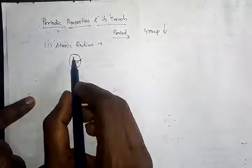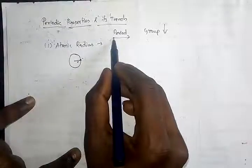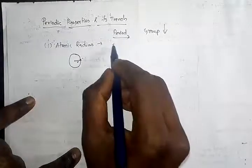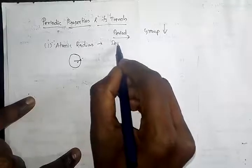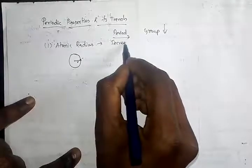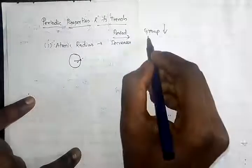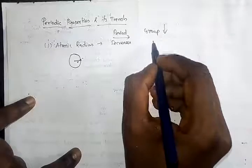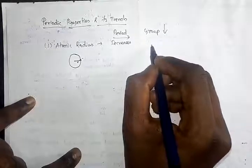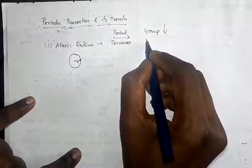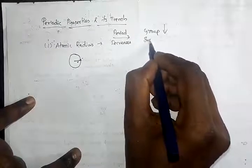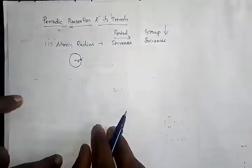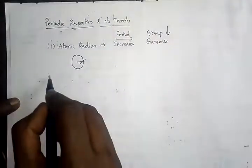When you go along the period from left to right, the atomic radius decreases. Whereas when you go down the group, an energy shell is added to the atom, so the atomic size increases.